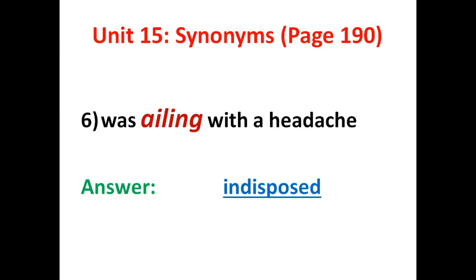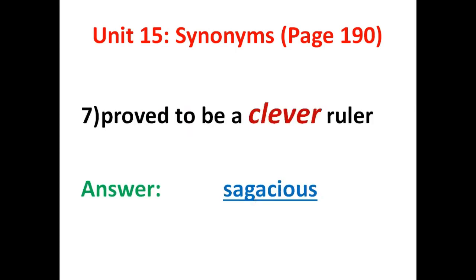'Indisposed' is the answer for number six, meaning slightly ill. Number seven: prove to be a clever ruler. 'Clever' is the keyword in the phrase. The synonym will be 'sagacious' — s-a-g-a-c-i-o-u-s. Sagacious describes a person who is very keen or smart in judgment or behavior.